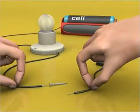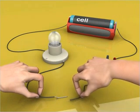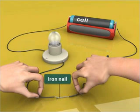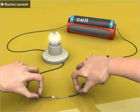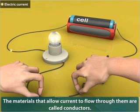Let us connect these two ends to an iron nail. Hey, the bulb starts to glow! This means that the iron nail completes the circuit and allows electric current to flow through it. The materials that allow current to flow through them are called conductors.